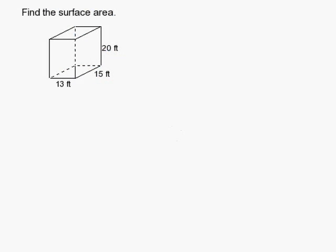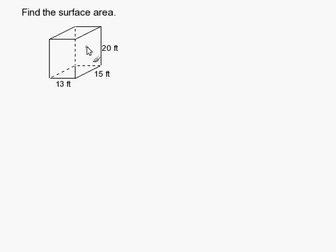How to find the surface area of a rectangular prism. Let's recall that a rectangular prism has six faces: the front and the back, the side and the side, the top and the bottom.